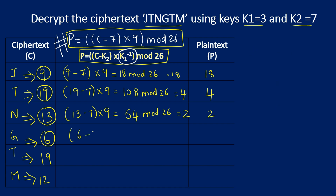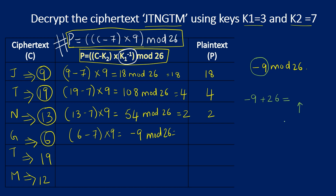For C = 6: (6 − 7) × 9 mod 26 = −1 × 9 mod 26 = −9 mod 26. When we get a negative number, we add 26 to it until we get a positive number between 0 and 25. Adding 26 gives 17, which is positive and in range. So −9 mod 26 = 17, and the recovered plaintext number is 17.